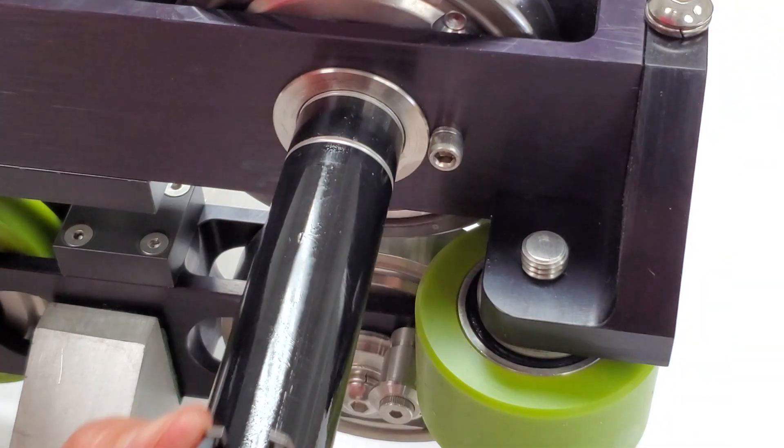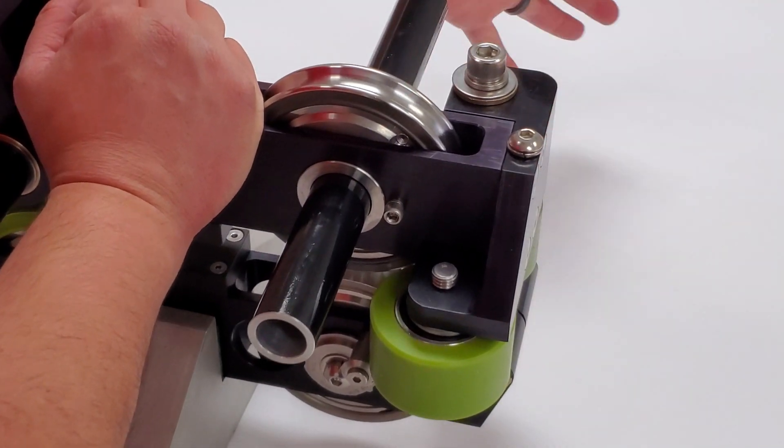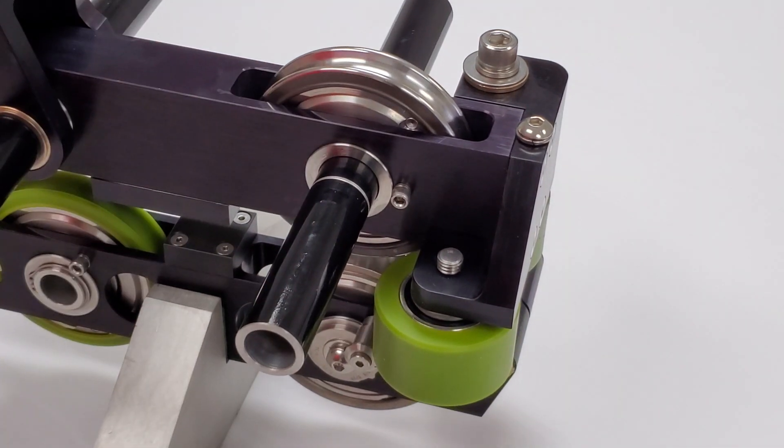With a pair of snap ring pliers, remove the snap ring from the wheel shaft. Break the guide wheel shaft loose and remove it from the AM5K frame.